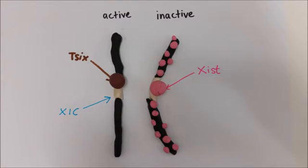In order to maintain a silenced X chromosome, Xist triggers a cascade of epigenetic modifications. To understand these, let's take a look at how DNA is packaged.